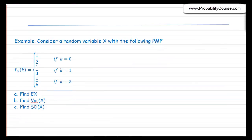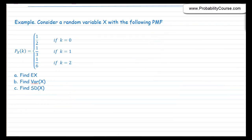This formula is sometimes useful when we want to calculate the variance. Let's look at an example: consider a random variable x with a given probability mass function. The question asks for the expected value, variance, and standard deviation of x.